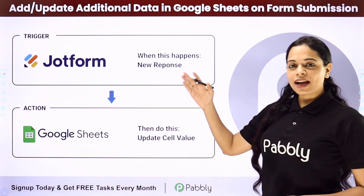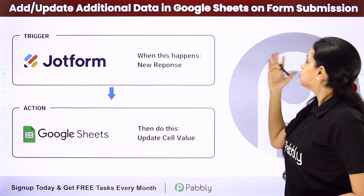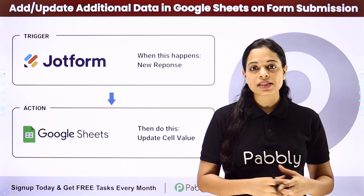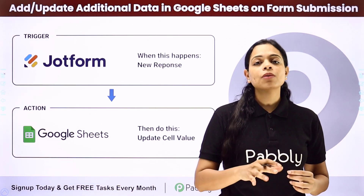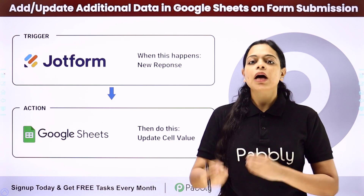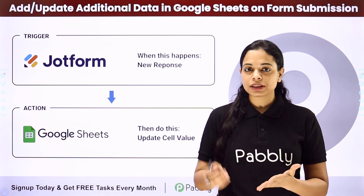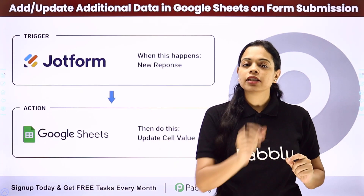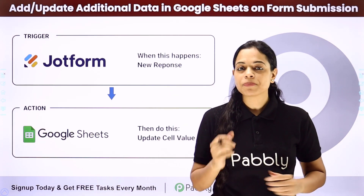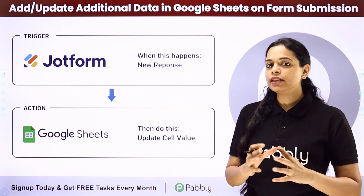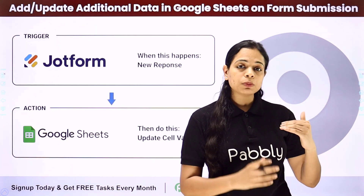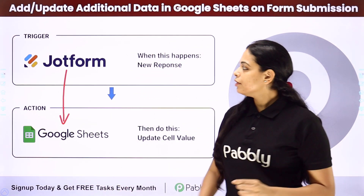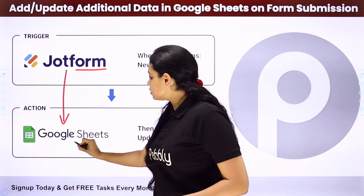In this video, we are going to see how to add or update additional data in Google Sheets on form submission. Let's say that I have an existing spreadsheet with the details of my employees. There is a new policy and a form submission through which I am collecting responses about that new policy. Every time I receive a response, the feedback should be added in the same spreadsheet in front of the person who submitted the response. This can be done by integrating the form builder application with the spreadsheet using Pabbly Connect. We have taken the example of JotForm and Google Sheets.